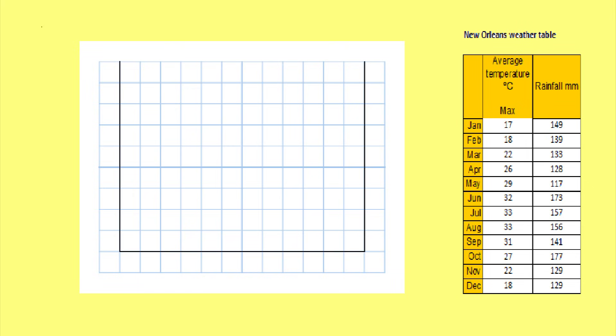First you must use a ruler to draw your X and your two Y axes. We will divide the X axis into 12 for the different months of the year and then label them January to December.